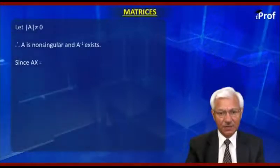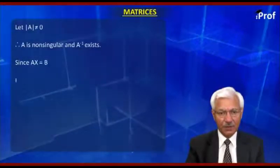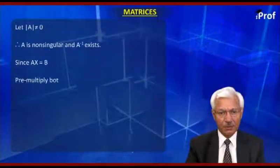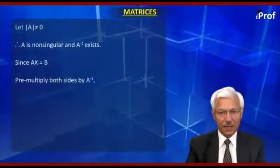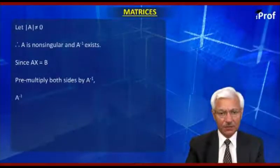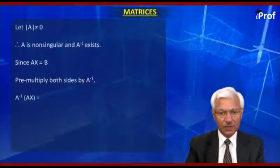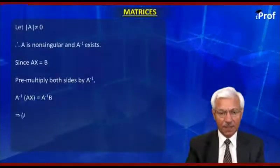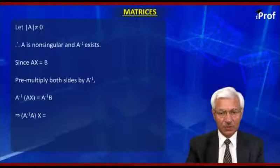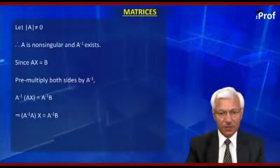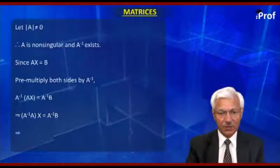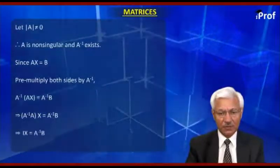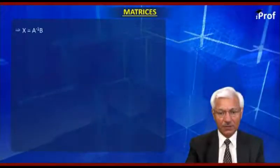Since AX = B, we pre-multiply both sides by A-inverse to get A-inverse(AX) = A-inverse B. This gives (A-inverse A)X = A-inverse B, but A-inverse A is unit matrix. That means IX = A-inverse B, or X = A-inverse B,